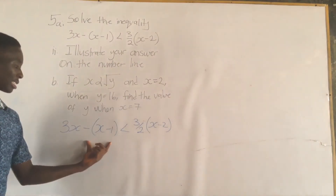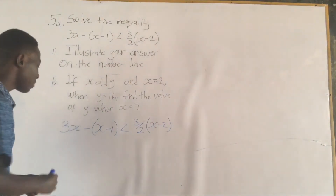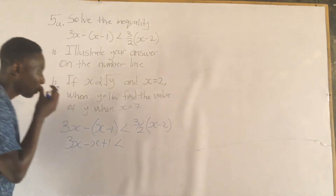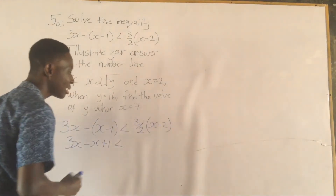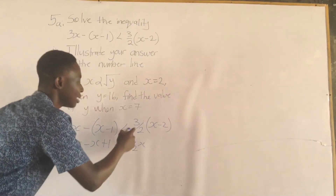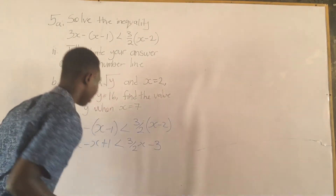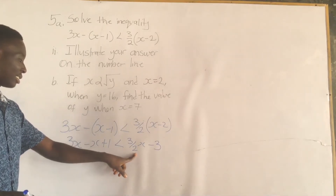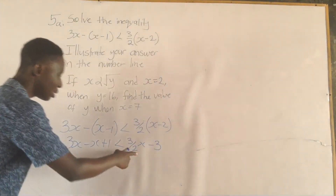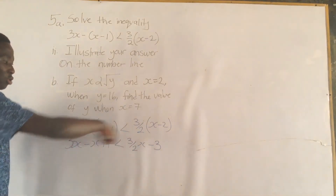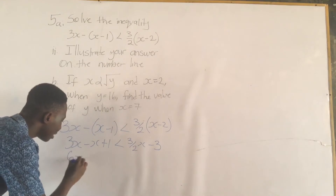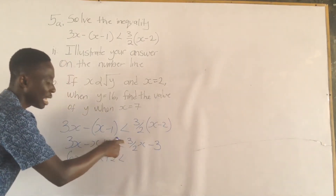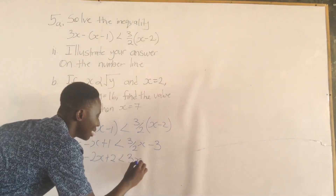What we are going to do first is expand the brackets. When we expand, we get 3x minus x plus 1 less than 3 over 2 x minus 3. To clear the fraction, we multiply everything by 2, giving us 6x minus 2x plus 2 less than 3x minus 6.